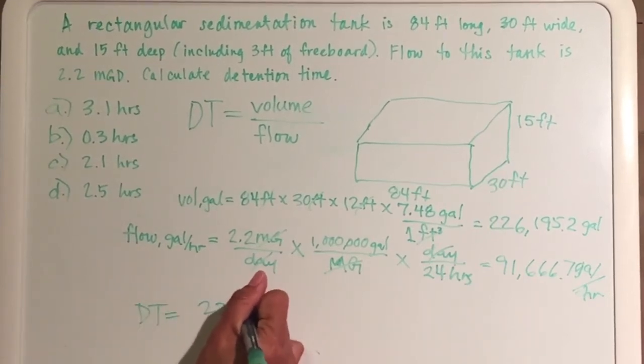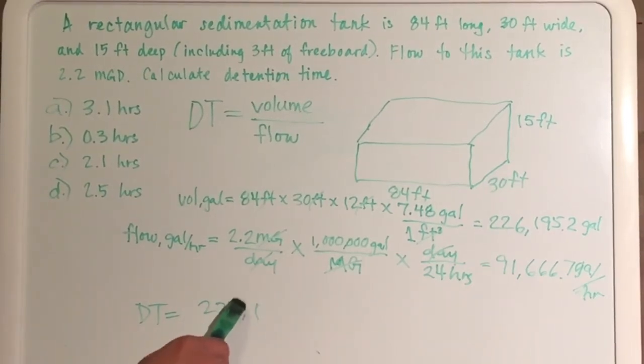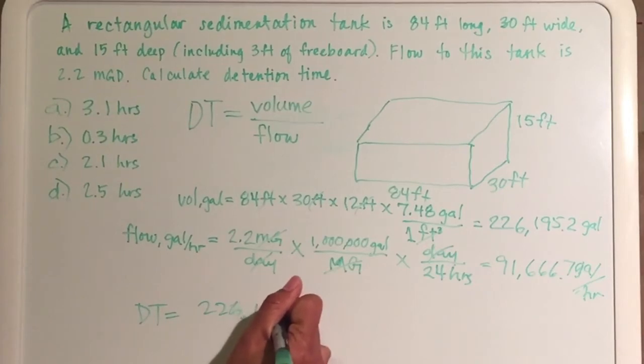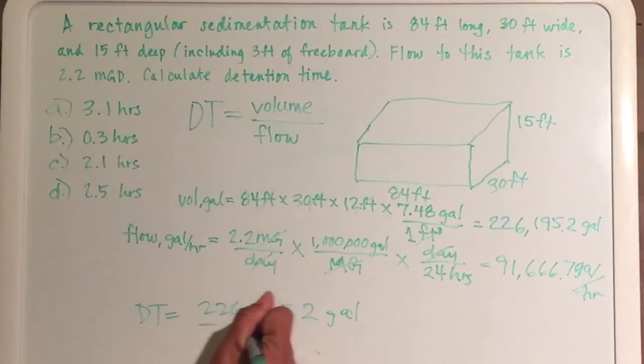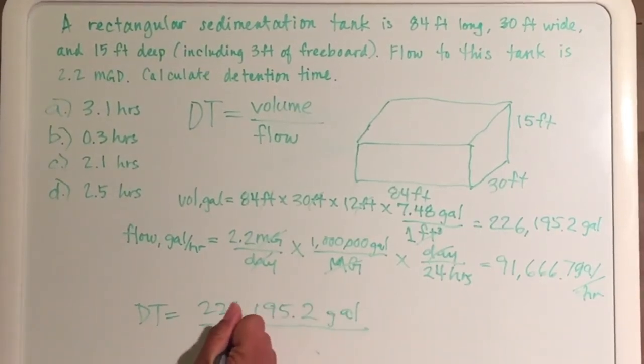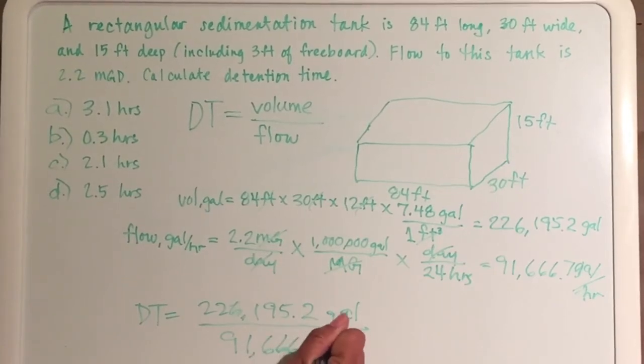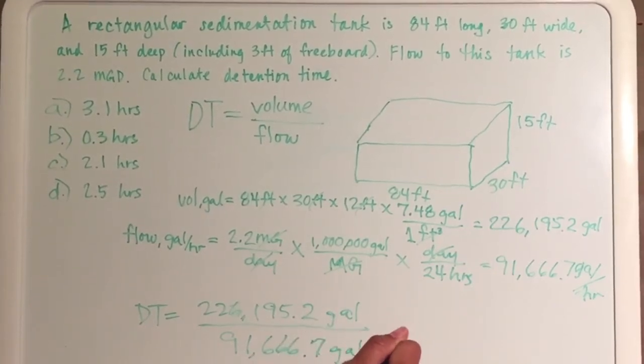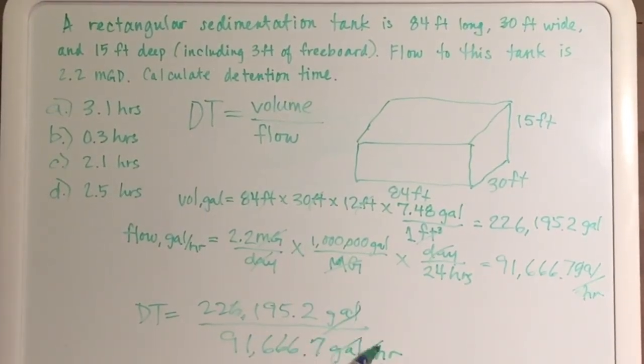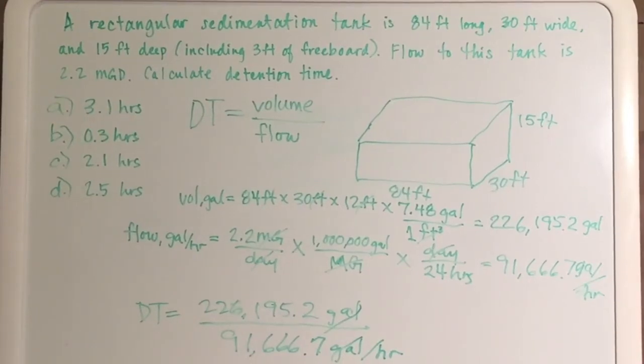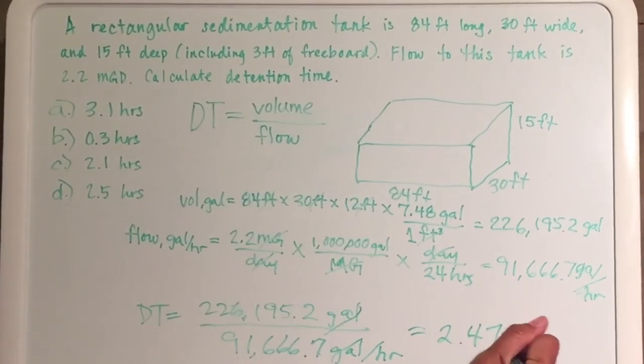226,195.2 gallons divided by 91,666.7 gallons per hour. When you cancel these two out you're left with hours, which equals 2.47 hours.